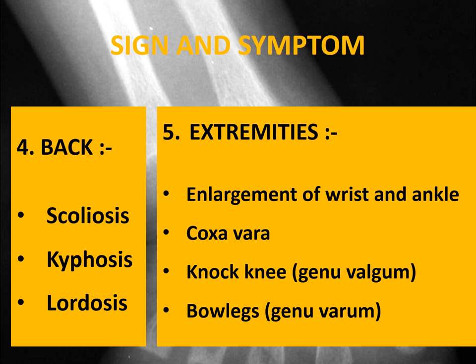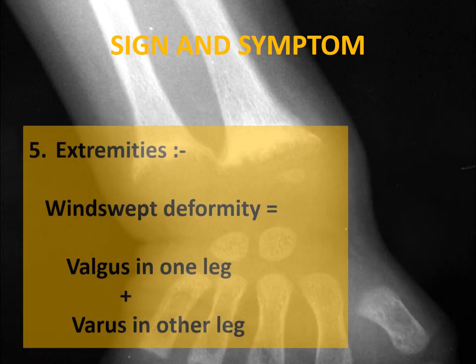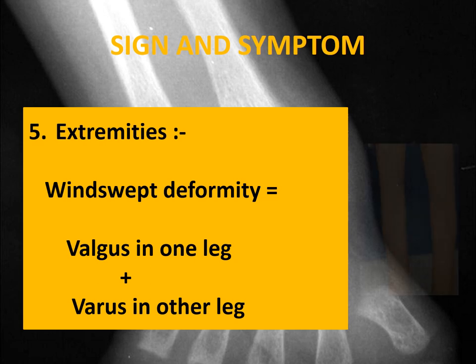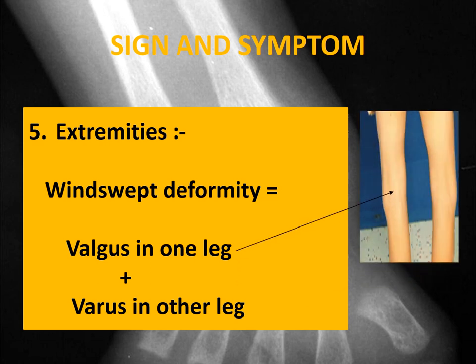Coxa vara is a deformity of the hip that can be seen in rickets. Knock knee is a valgus deformity of the knee joint in which the knee joints touch each other, so the gap between the knees in the standing position is reduced. Bow legs are due to varus deformity, also known as genu varum, where the knees are far apart. If the patient has valgus deformity in one leg and varus deformity in the other, it is known as wind-swept deformity.